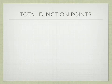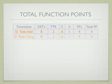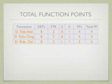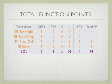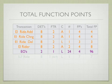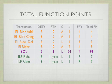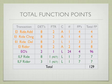Now let's look at total function points. We have the EIs discussed before, and now the EOs — there are 24 EOs with four function points each, giving 96 total function points for EOs. The second column shows the count of each type. Adding in the ILFs discussed earlier, we arrive at a grand total of 129 function points defined in this case study.